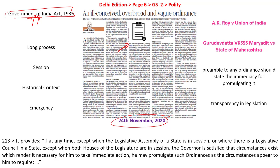You might ask: we have the separation of powers — who makes the laws? It is the legislature, the Parliament, and at the State level, it is the Assembly. The Executive implements the law, and the Judiciary interprets whether it is ultra vires the Constitution. The question is why is this power of lawmaking given to the Executive? That is because of several reasons, which we need to understand.